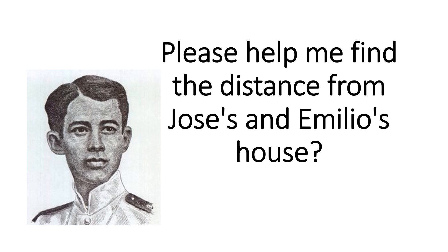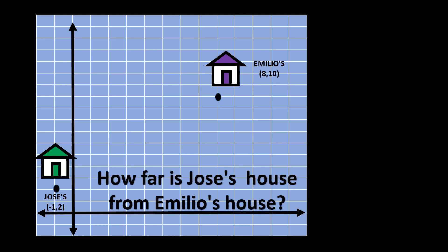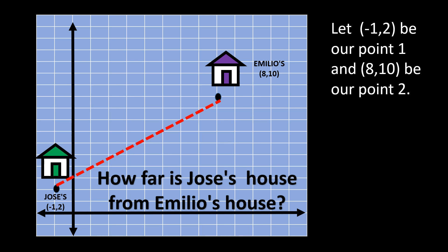Please help me find the distance from Jose's house to Emilio's house. Now remember, you can interchange the two points. So point 2 can be negative 1, 2, and point 1 can be Emilio's house at 8, 10. Just don't forget which is your point 1 and point 2 to determine x sub 1, x sub 2, y sub 1, and y sub 2.